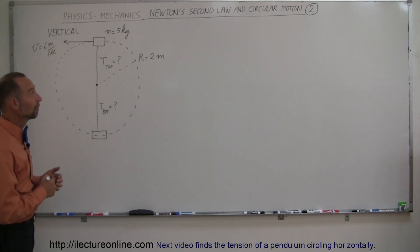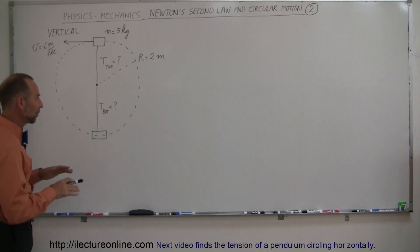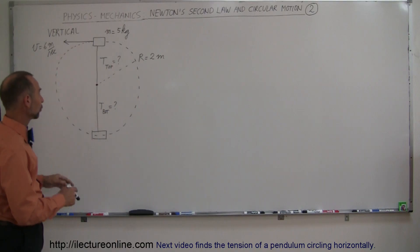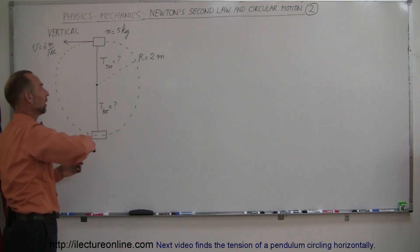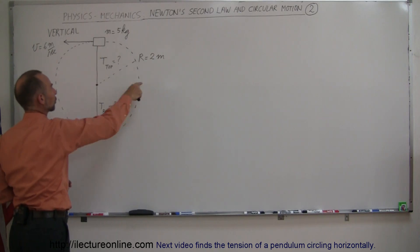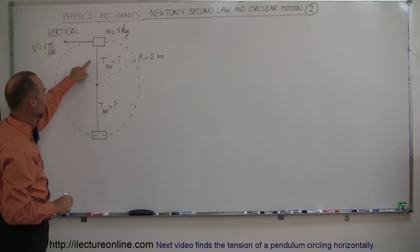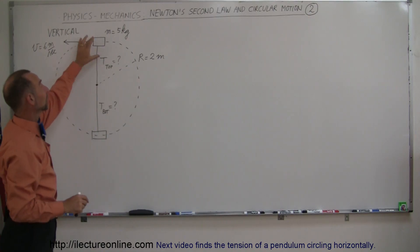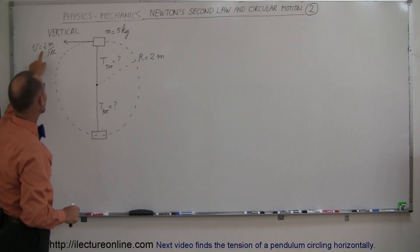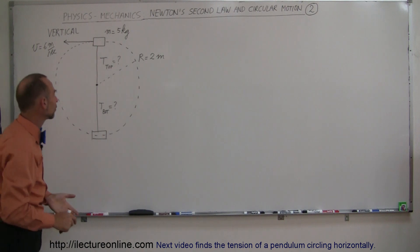Here's our second example of applying Newton's second law to circular motion. In the first example we had horizontal motion; in this second example we have vertical motion. Someone's going around in a circle — a mass of 5 kilograms attached to a string, going around in a circle of radius 2 meters. What is the tension in the string when the object is at the top, and what is the tension when the object is at the bottom, if it's going around at a constant speed of 6 meters per second?